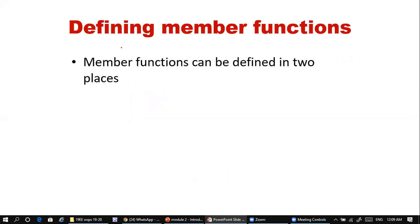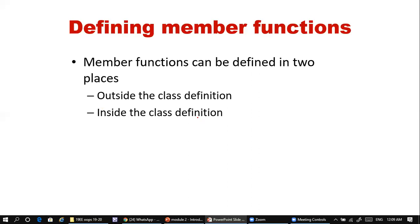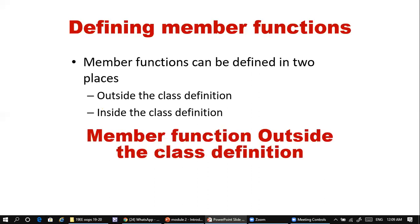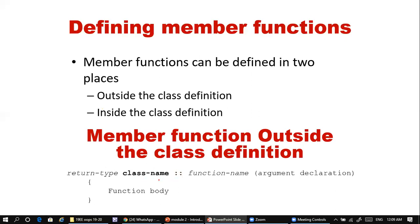Member functions can be defined in two places: inside the class or outside the class. When a member function is declared outside the class, we use the scope resolution operator (::) followed by the class name and function name, connecting the function to its class. Then you write the arguments, return type, and function body.